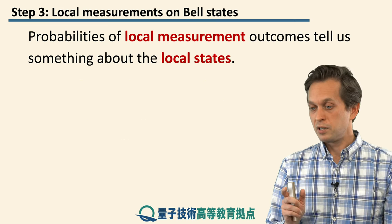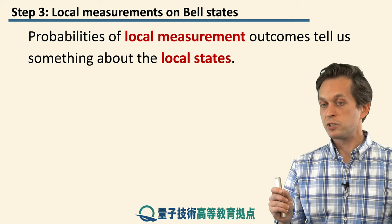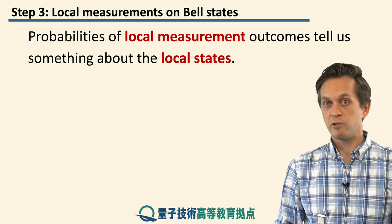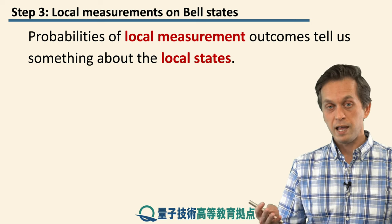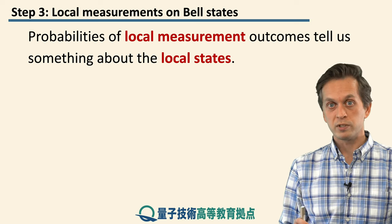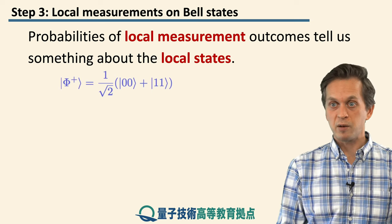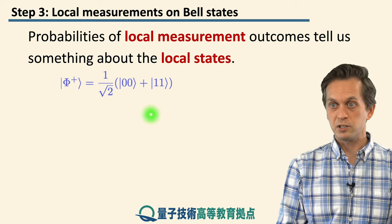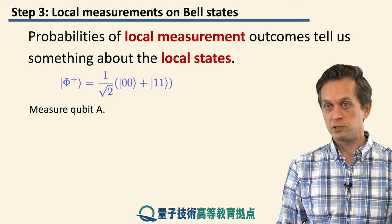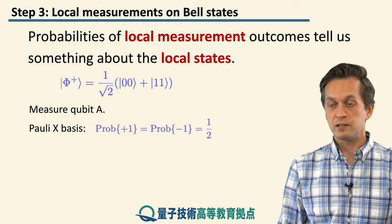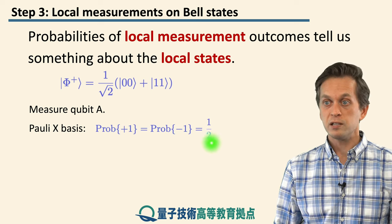Let's ask a different question. Given that we have a Bell pair, what happens if we just measure one qubit? We encountered this scenario in the CHSH game, where the players were sharing a Bell state |0,0⟩ + |1,1⟩ and performing local measurements on the qubits in their possession. Taking phi-plus as a concrete example, if we measure only qubit A in the X basis, we find that the probability of the +1 outcome and the −1 outcome are equal — each is one half.